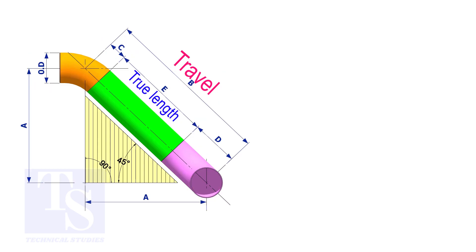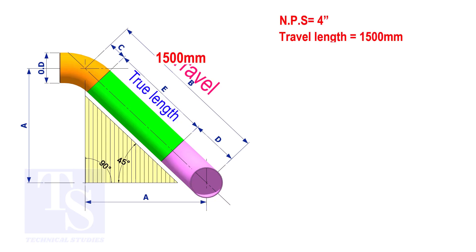Assume that the elbows are short radius. Nominal pipe size is 4 inch. The travel length is 1500 millimeters. The joint gap is 3 millimeters. Calculate the true length of the spool.